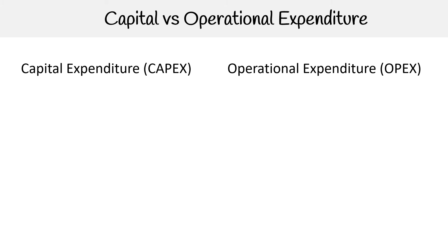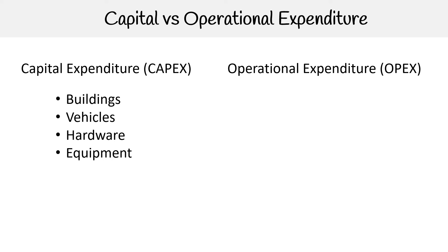For capital expenditure, this is your on-prem costs — if you own everything. So you own or rent the building, you own the vehicles, maybe company vehicles, you own the hardware, you own any type of equipment to do the job, and maybe you even own or rent the land. A lot of people still like to do on-prem or data center because they care about capital expenses, because they can get tax breaks and other things like that.